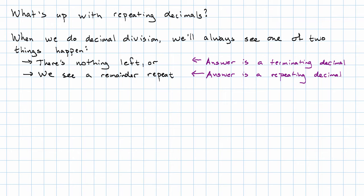We know those are the only two possibilities because the remainder is always smaller than the divisor. That means, among other things, that every fraction can be written as either a terminating or repeating decimal.